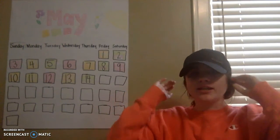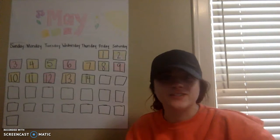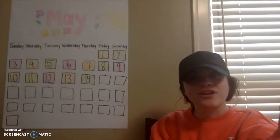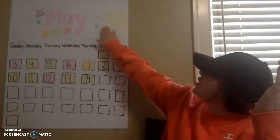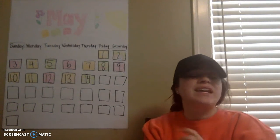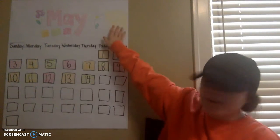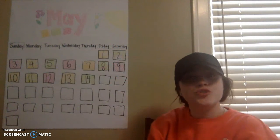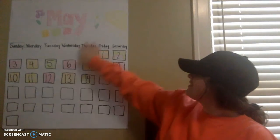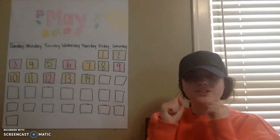Good morning, everybody. Miss Sarah's hair was not listening today, so she had to put a hat on. We are going to get started with our calendar this morning. We have the month of May. Yesterday it rained a lot, but the sun is coming out and our flowers and trees will grow. So we are in the season of spring. Let's look at our calendar, but first we've got to sing our good morning song.